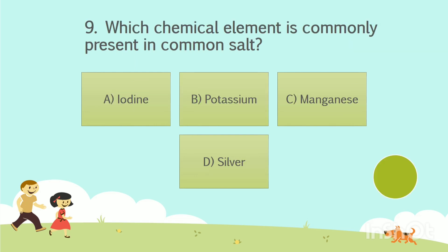Question No. 9. Which chemical element is commonly present in common salt? Option A: Iodine. Option B: Potassium. Option C: Manganese. Option D: Silver. Your time starts now. The answer is Option A, Iodine.